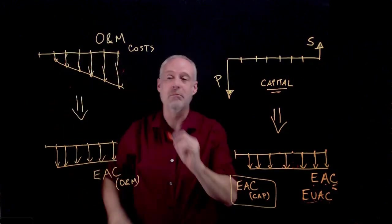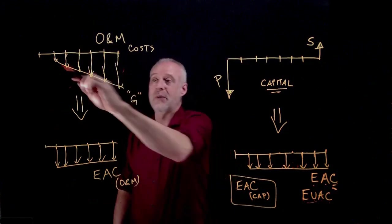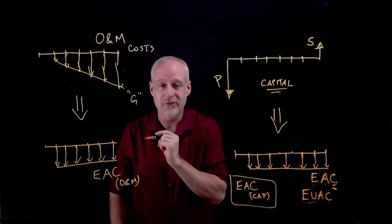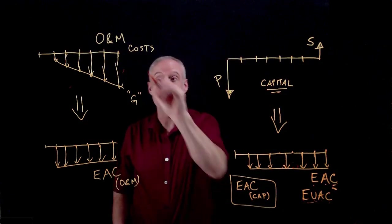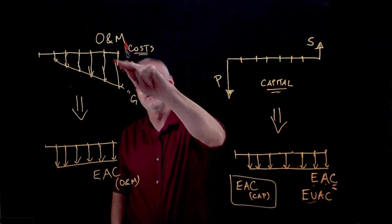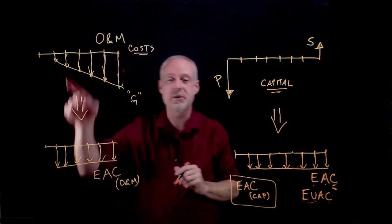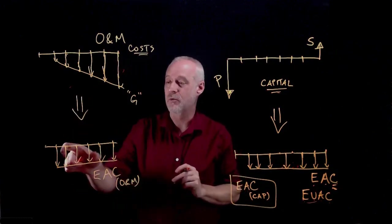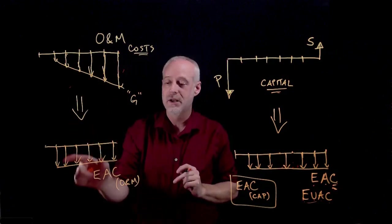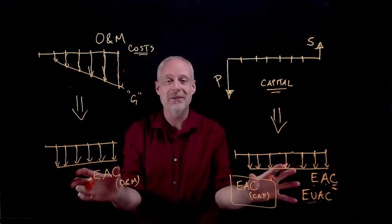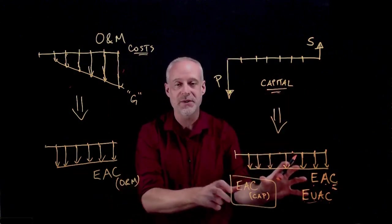So we could model this as a G, or maybe they would actually increase at a certain rate of increase, in which case they can be modeled with a little g. But they're still costs, so they're still down arrows. All of these are still down arrows. And then, when we convert them to an equivalent annual annuity, we can then add them together with the capital component of the costs.